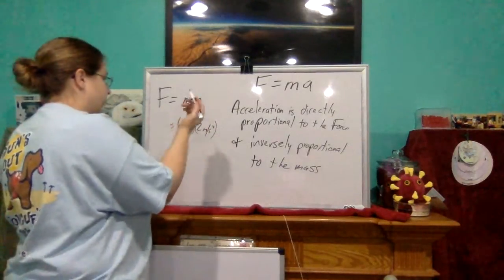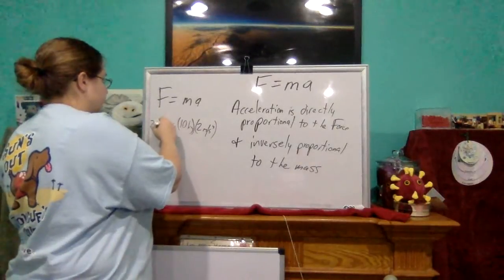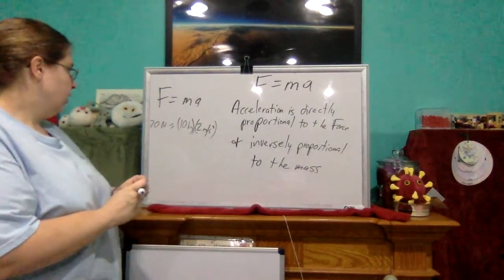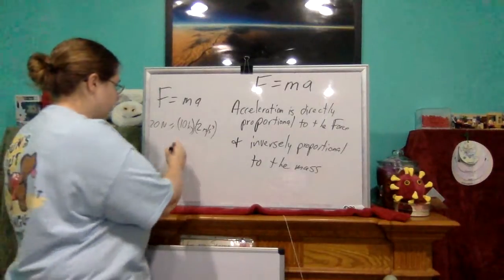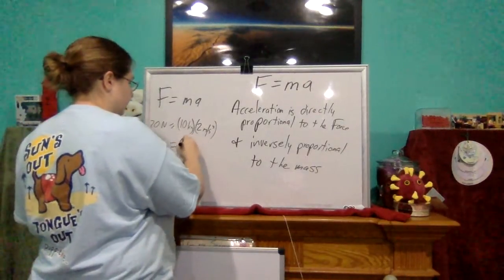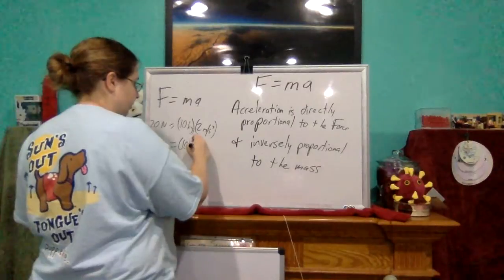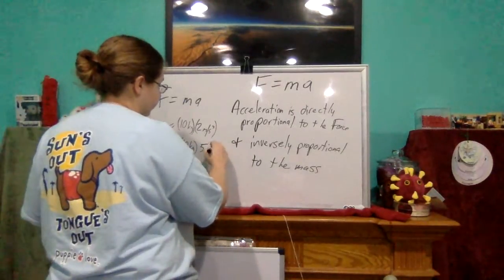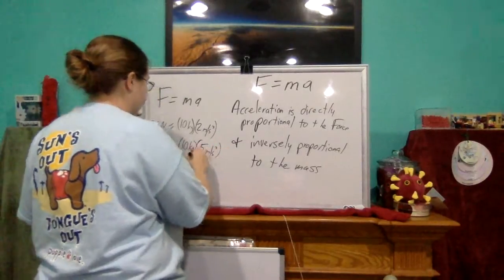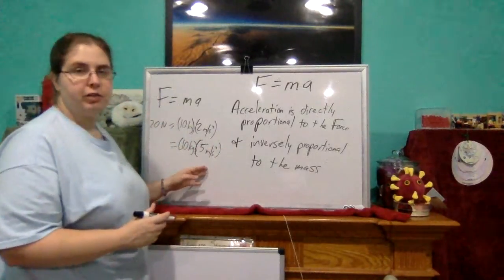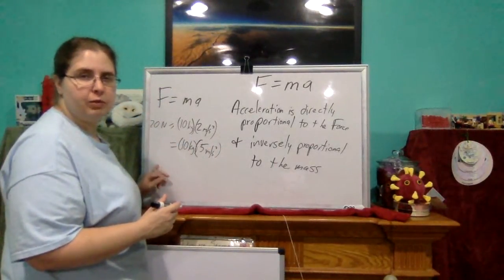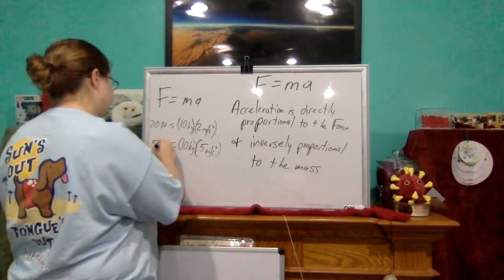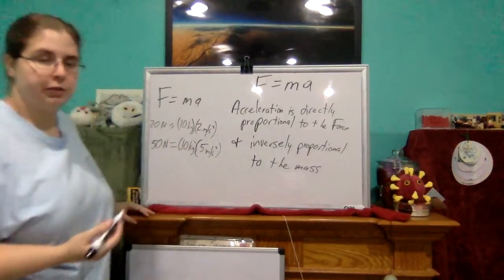If I multiply those together, I get a force of 20 newtons. What happens if I increase the acceleration? Mass will still be 10 kilograms, I increase the acceleration to 5 meters per second squared. Now that I've increased my acceleration, what's going to happen to the force? It will increase as well — so 10 times 5 is 50 newtons of force.